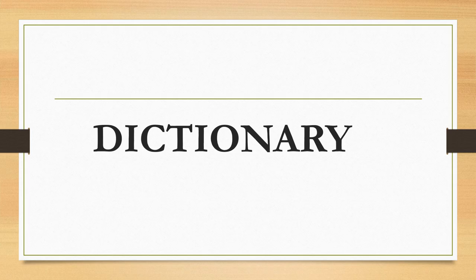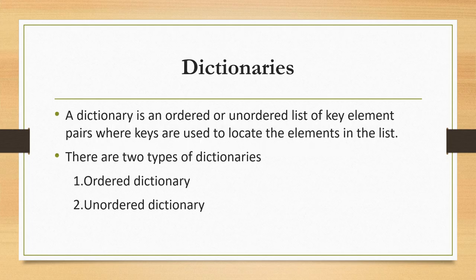Hello everyone. In this video I am going to explain about dictionary. A dictionary is an ordered or unordered list of key-element pairs, which means it is a combination of key and data, where keys are used to locate the elements in the list.